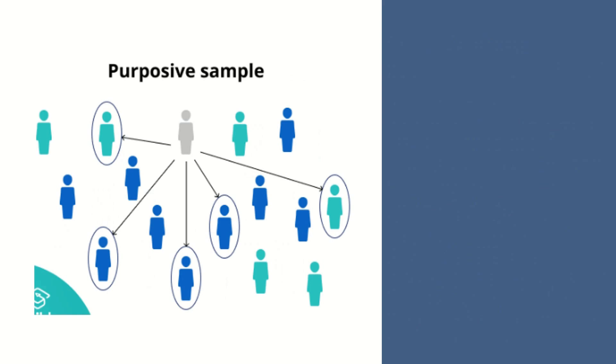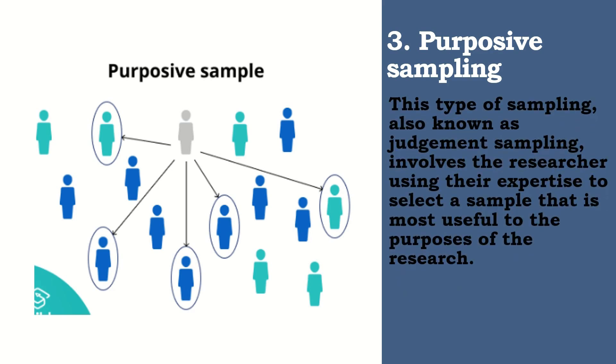The third type of non-probability sampling is called purposive sampling. When we say purposive sampling, this type is also known as judgment sampling. It involves the researcher using their expertise to select a sample that is most useful to the purposes of the research. It's often used in qualitative research where the researcher wants to gain detailed knowledge about a specific phenomenon rather than make statistical inferences, or where the population is very small and specific. An effective purposive sample has clear criteria and rationale for inclusion.